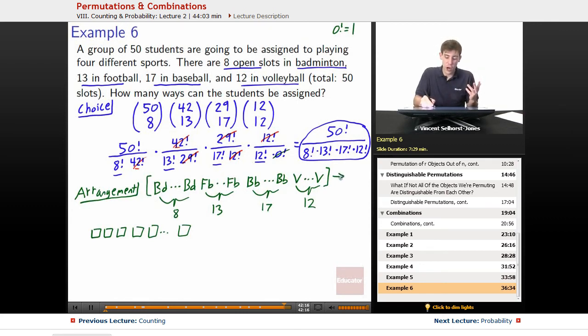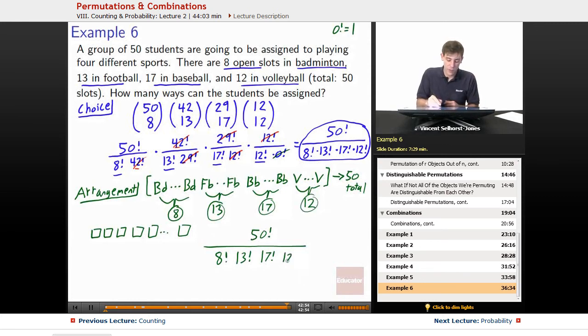So how many ways are there to arrange this set of cards? We've got a total of 50 cards. So we have 50 factorial divided by, what are we going to divide by? How many ways can we arrange the badminton cards? It doesn't matter which badminton card you get. They all mean the same thing. So we divide by 8 factorial because the arrangement of our badminton cards doesn't matter. Next, we divide by 13 factorial, all the ways that we can arrange our football cards. Then we divide by 17 factorial, the baseball cards. Then finally, we divide by 12 factorial, the volleyball cards. So what we're seeing here is distinguishable permutations of our cards, all the ways that we can have distinguishable permutations of these 50 assignment cards.